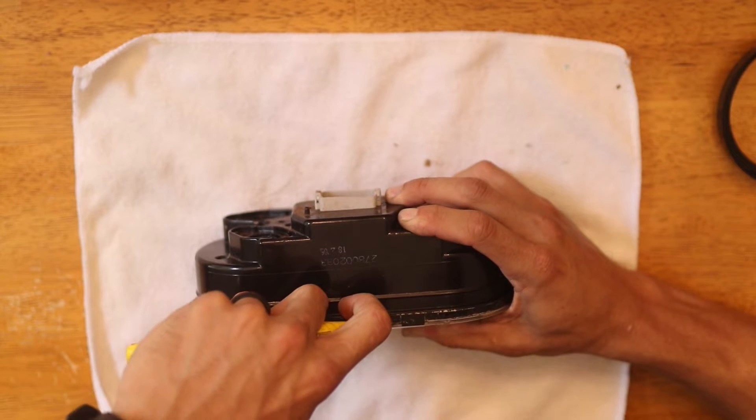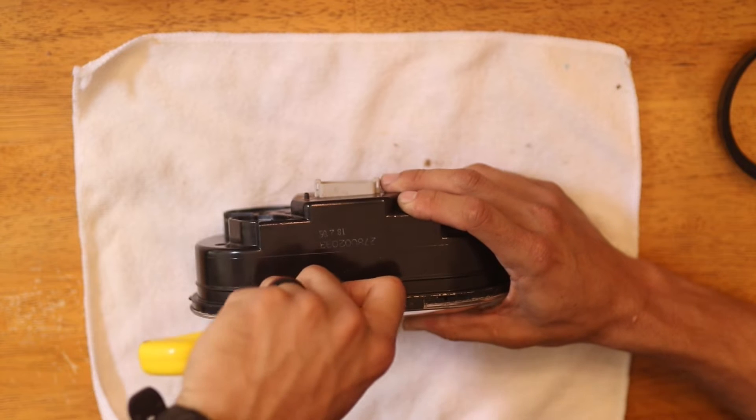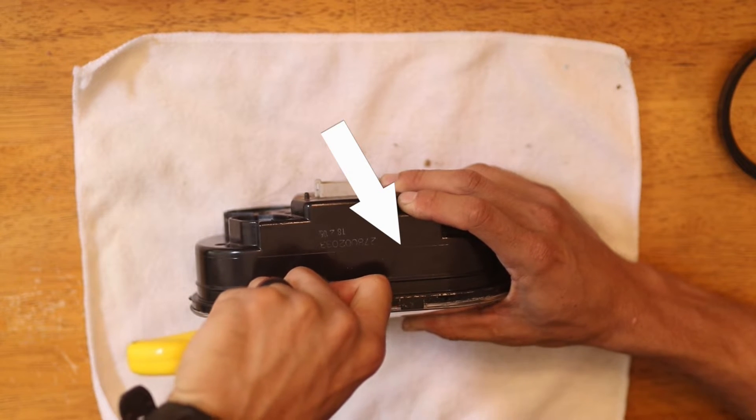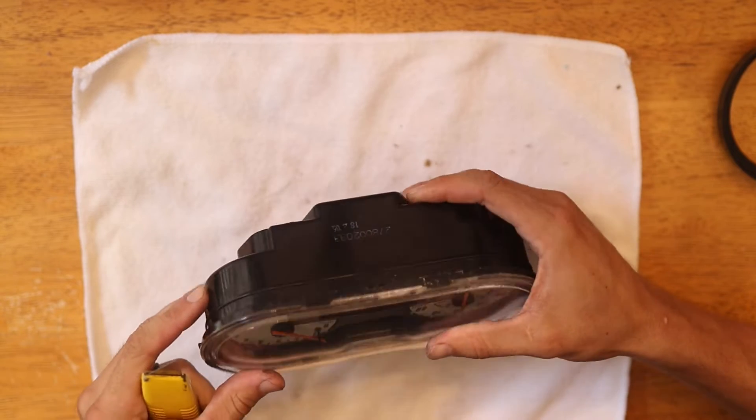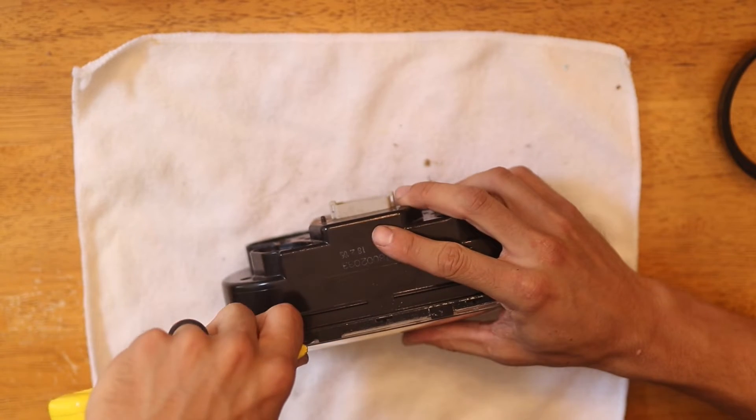Instead of this, I would recommend using a small saw blade like a Dremel here, make a cut at that seam, then after you're done, weld it back together with a plastic welder and some ABS rods.